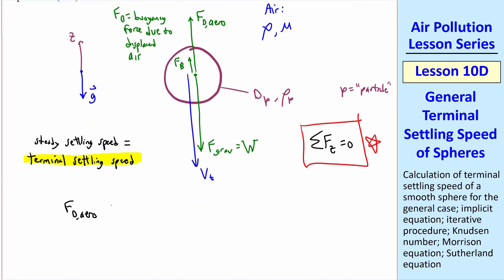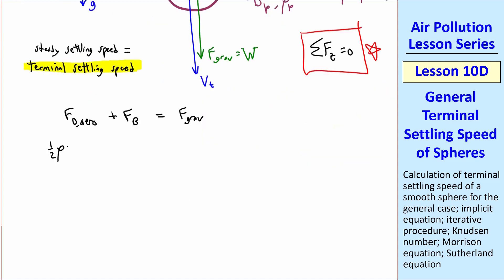Now let's sum all the forces and set them equal to zero. The upward forces are Fd plus Fb, and the only downward force is the gravity force. The aerodynamic drag is ½ρvt²(Cd/C) times πdp²/4, where we defined Cunningham correction factor in a previous lesson.